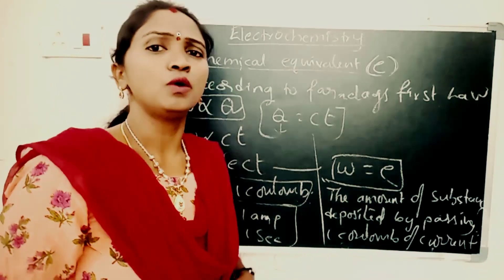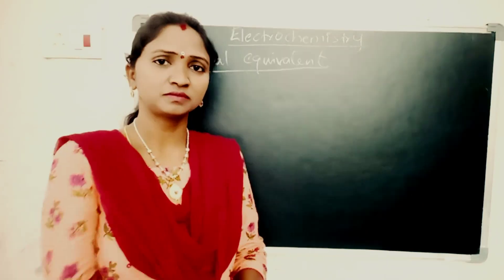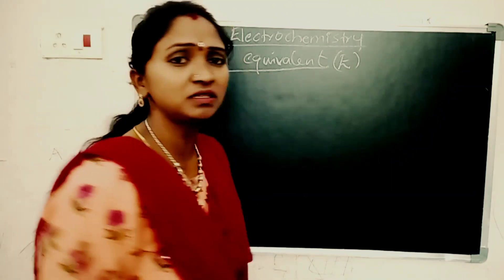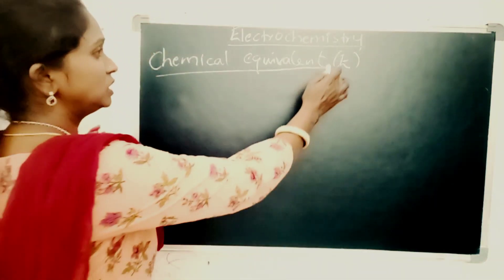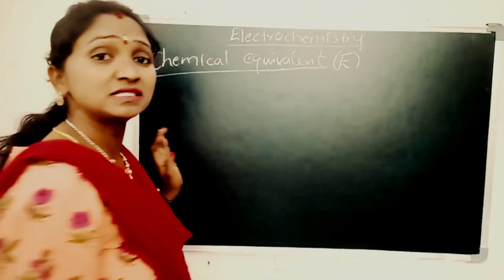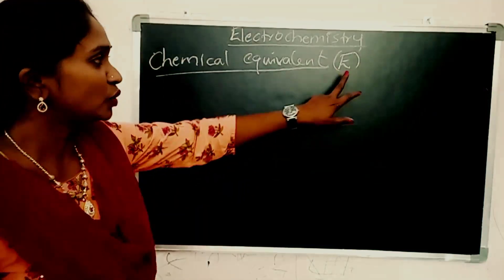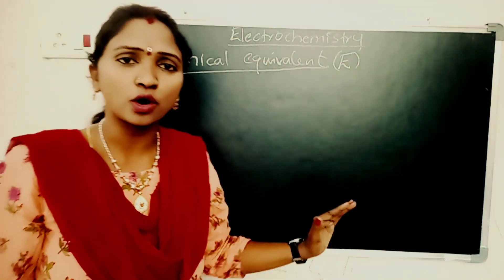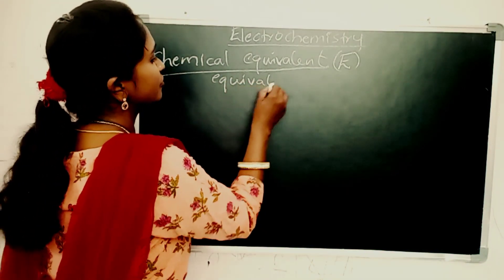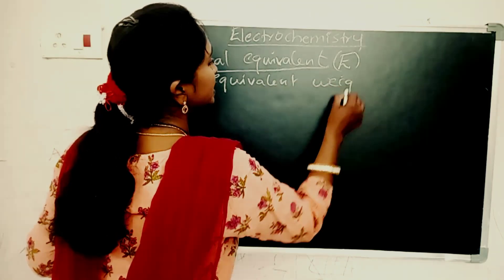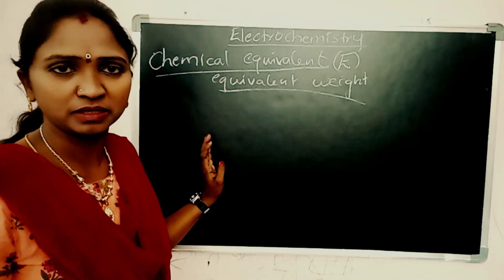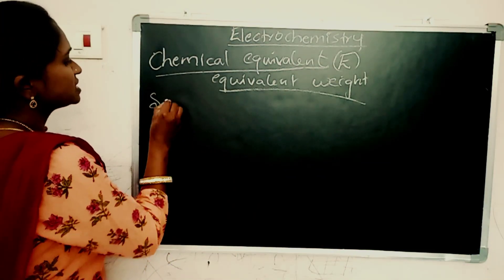Now let us move on to what is meant by chemical equivalent. Chemical equivalent is represented by the term capital E, and this term appears in Faraday's second law. Capital E is also called chemical equivalent or equivalent weight.